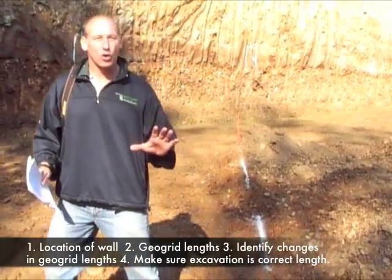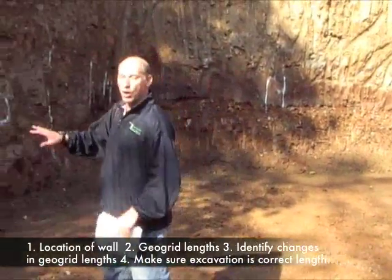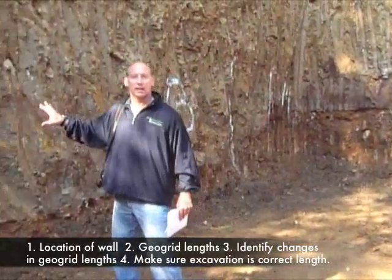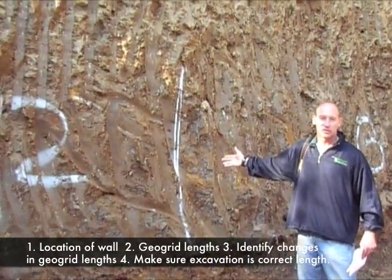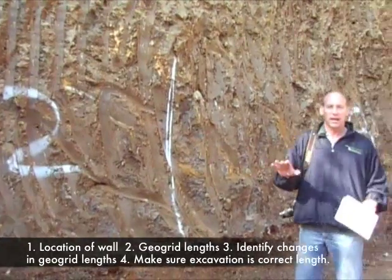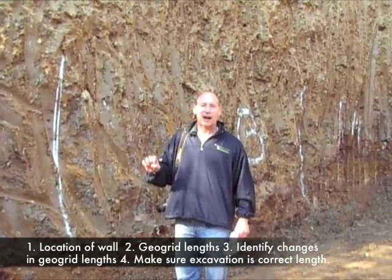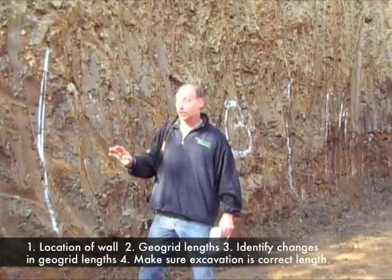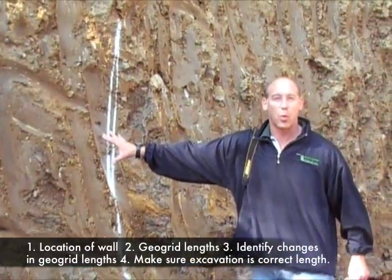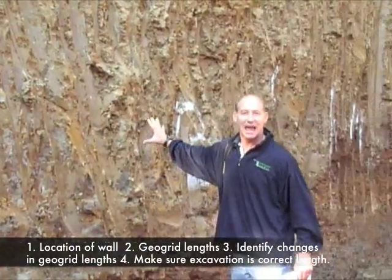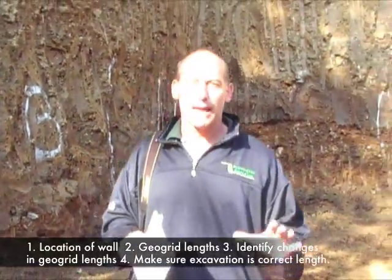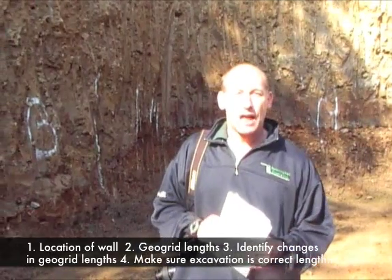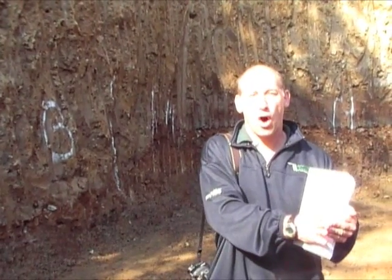Next in wall layout are the geogrid lengths. The geogrid lengths can be conveniently painted on the bank of an excavation if you have clay soils. The third thing is identifying where changes to the geogrid lengths occur. For example, this geogrid length is 12 feet, this geogrid length is 13 feet. The next thing during wall layout is to confirm that the location of the wall and the geogrid length is accurate.